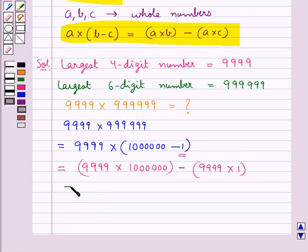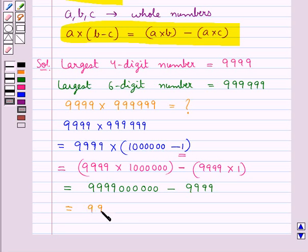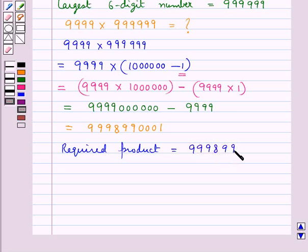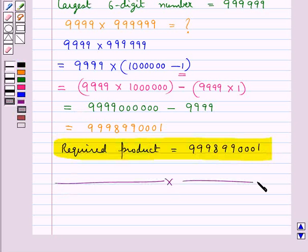This gives us 99,99,000,000 minus 9999, which equals 99,99,00,001. So the required product is 9,99,90,001. This is our final answer. Hope you have understood the solution of this question.